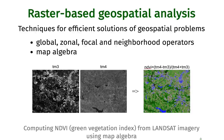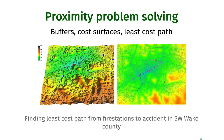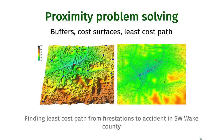We will cover some basic tools in raster-based geospatial analysis. One of the most important and versatile tools is map algebra. Here is an example of how you can use map algebra to compute the NDVI index, which is the greenness index from Landsat imagery. We will also cover proximity problem solving, which involves tasks that combine buffers and map algebra, as well as cost surfaces and how they can be used to solve optimization problems such as finding the least cost path.